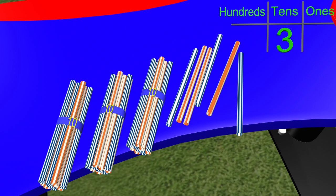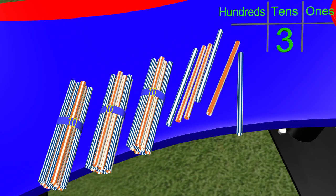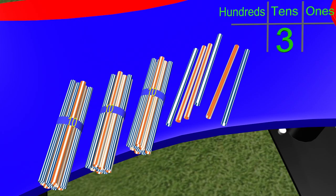Now let's count the remaining straws in the ones place. One, two, three, four, five, six. What does 30 plus six equal? If you said 36, you are correct.